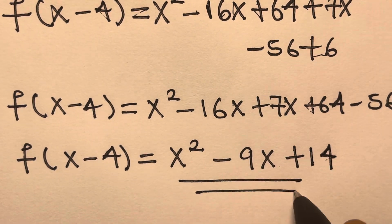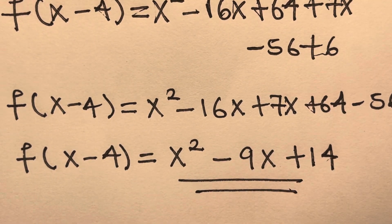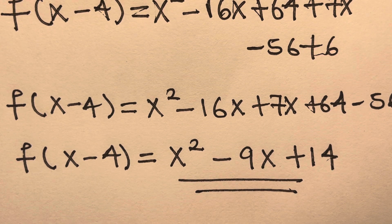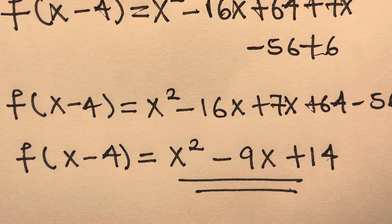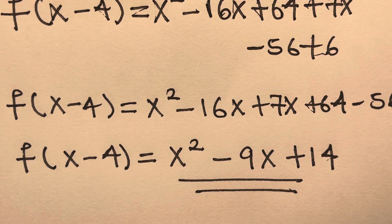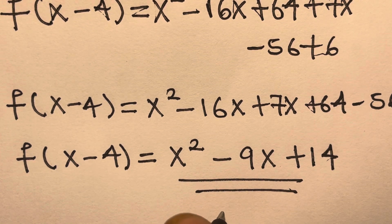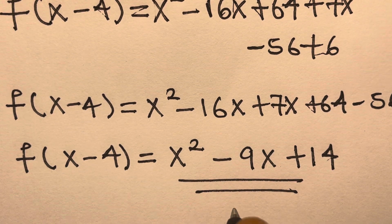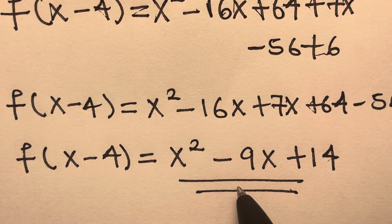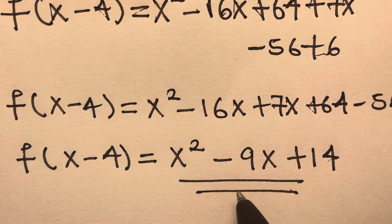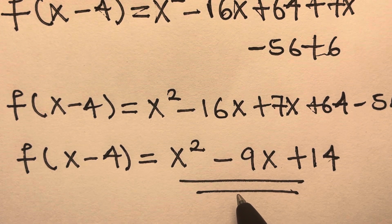Looking at this, you can see we obtain the same answer as the first method. So f(x-4) equals x squared minus 9x plus 14. Thank you for watching, I hope you enjoyed this video. Please like, leave a comment, share with your friends, and subscribe to my channel for future videos.